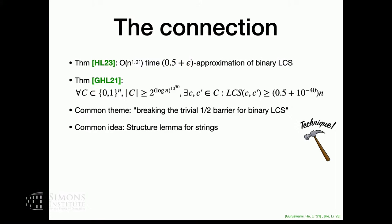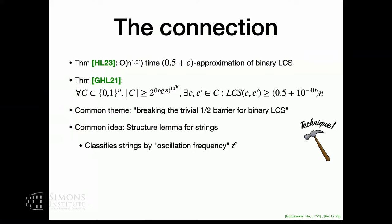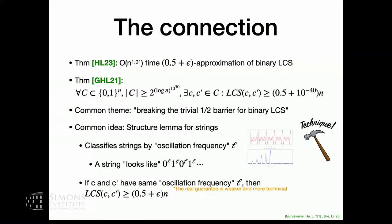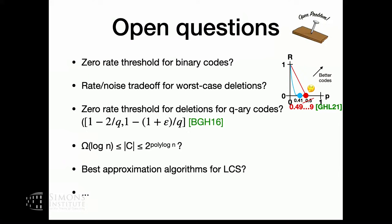For both of these results, we break this trivial one-half barrier, and we do it with similar ideas. Since it's a 10-minute talk, I don't have to go into detail about the techniques because it's very technical. The highest level idea is we come up with something roughly analogous to a Fourier transform for strings — a structure lemma that classifies strings by their oscillation frequency. There are a bunch of open questions here, both for the approximation algorithms and for the deletion codes. That's all, thanks.